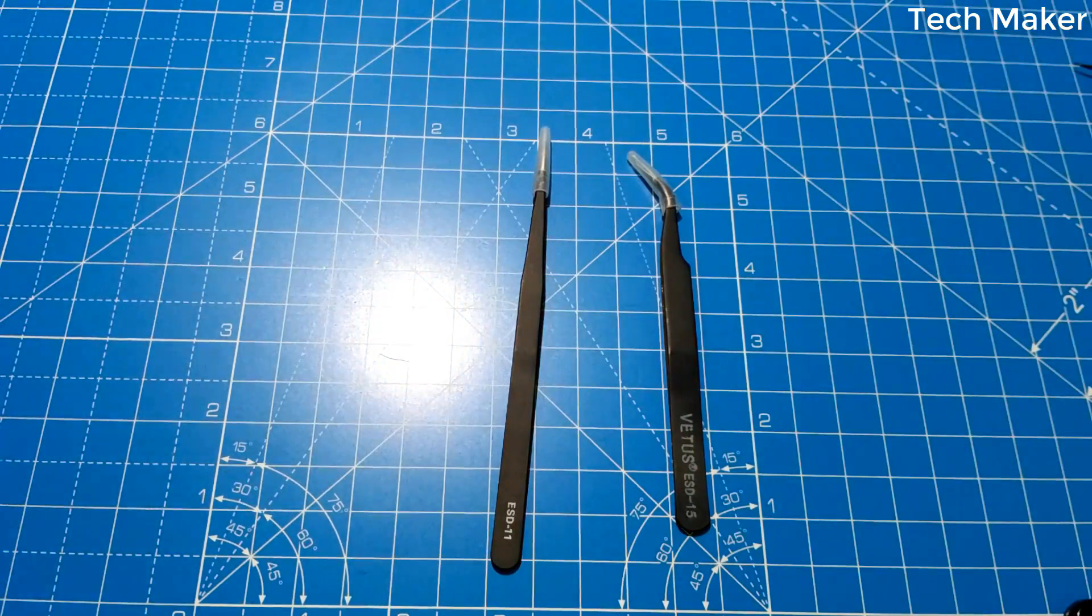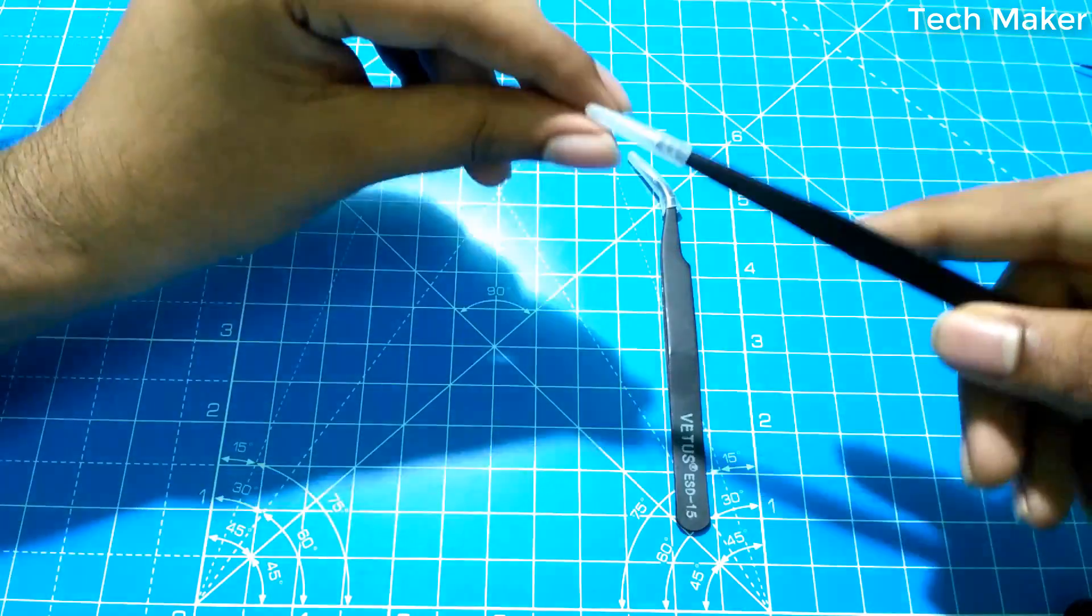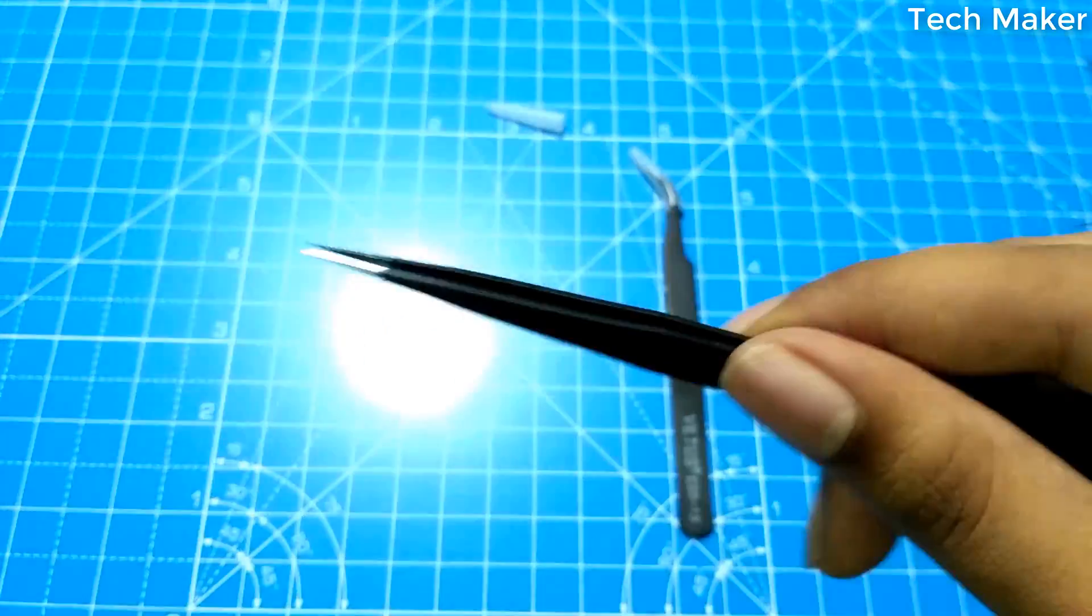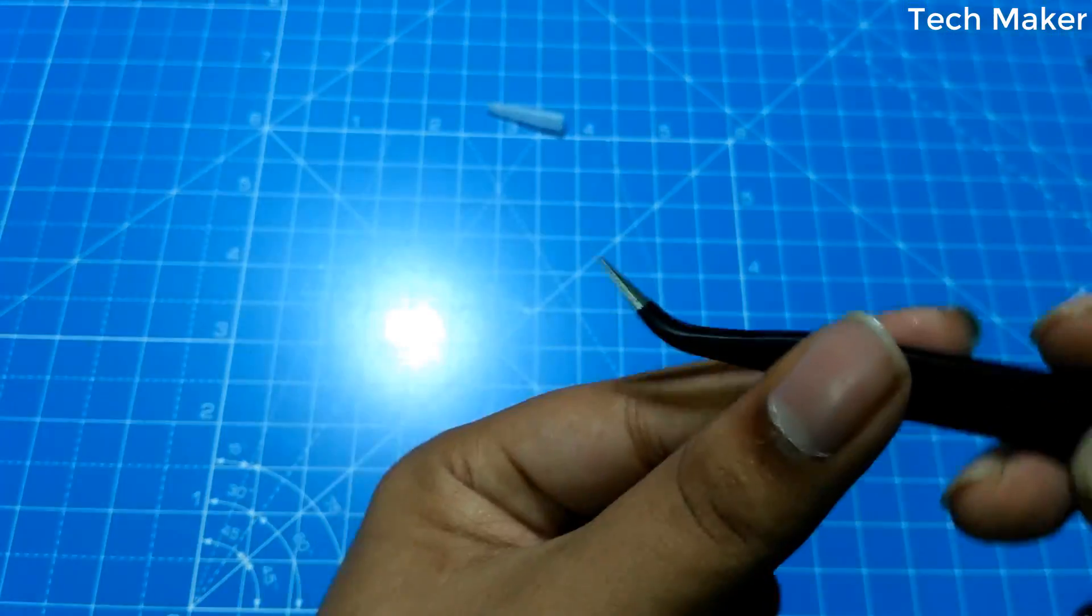Here you can get the two tweezers which are anti-static. You can also see the protection over here. One is a pointed one and one is a folded one.